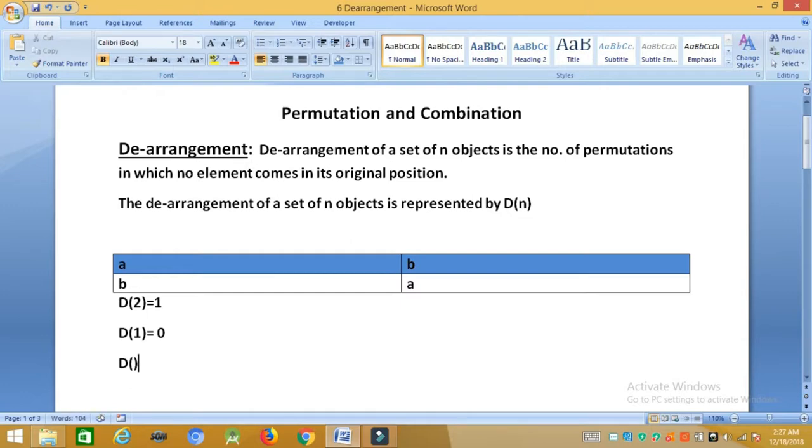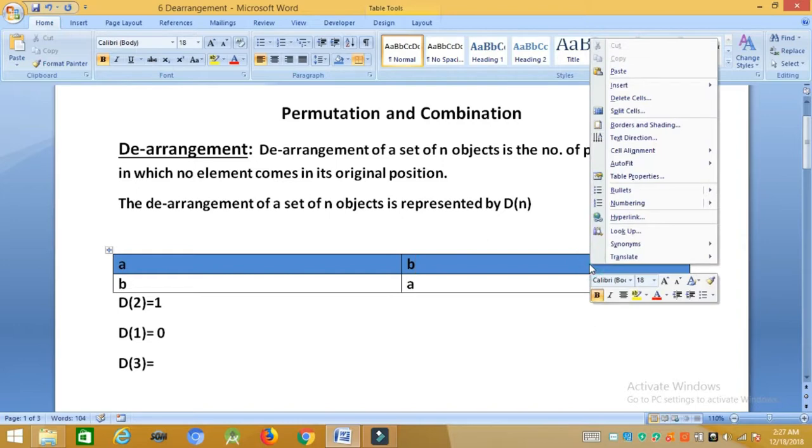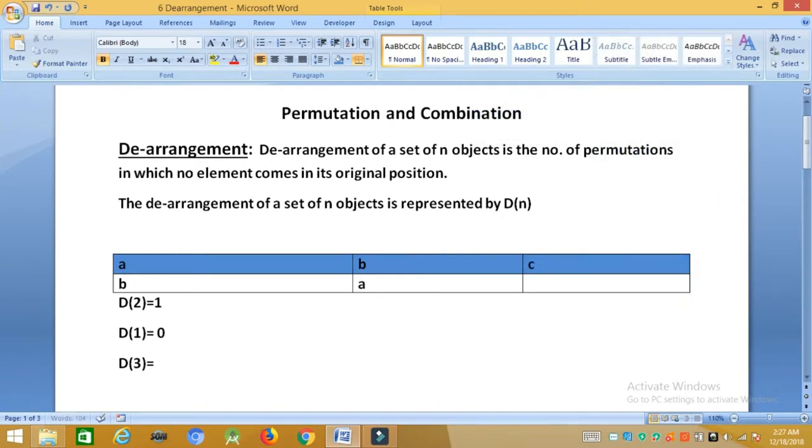Similarly for d3. Let us look. What can we do with d3? Let me insert one more column. Now here we have the third object as c. So what can we do with d3? Can I do this? For three objects, can I consider it as a derangement? No. Because c and a have been displaced from their original position, but b is still intact in its original position. Derangement means that no object should come in its original position. So this cannot be considered as a derangement. So we have to consider something else.